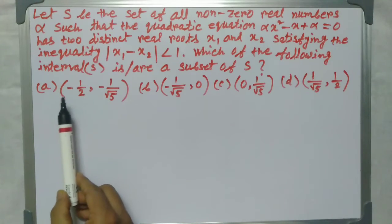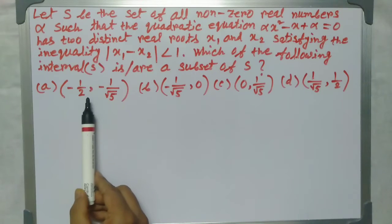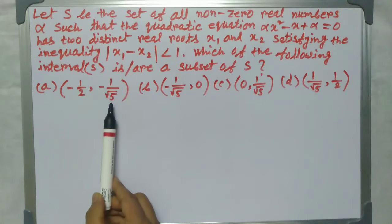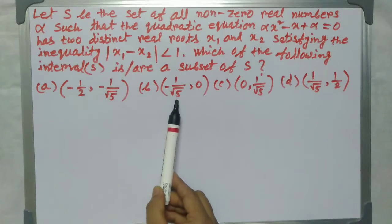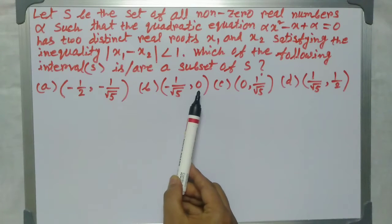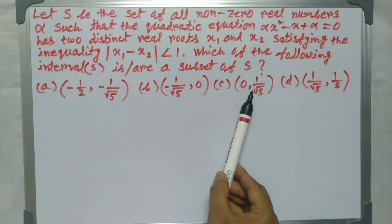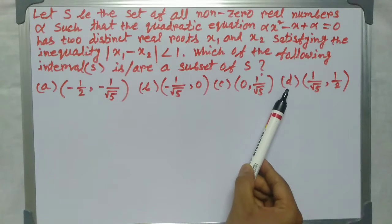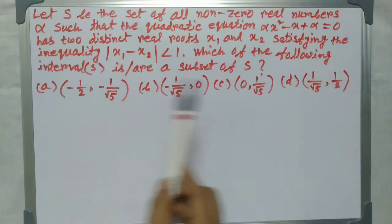Option A: (-1/2, -1/√5). Option B: (-1/√5, 0). Option C: (0, 1/√5). Option D: (1/√5, 1/2).